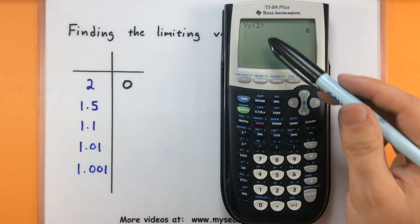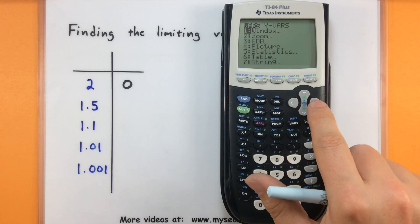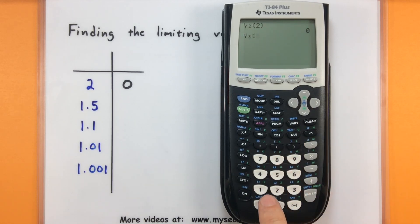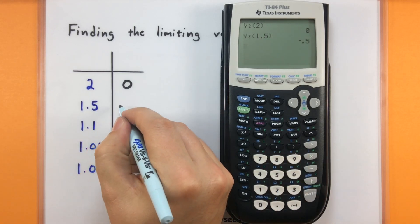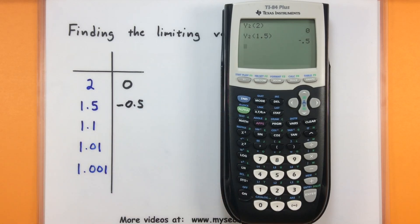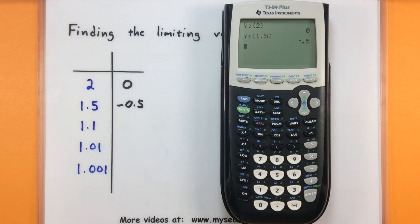So now that this is on my screen, let's go ahead and feed in 1.5. Repeat those process. So variables. Y variables. Function. Make sure y2. Open up parentheses. 1.5. Enter. So now I'm getting a different one. This is negative 0.5. And you can repeat that process for the rest of these values.